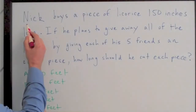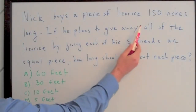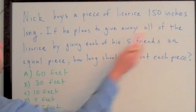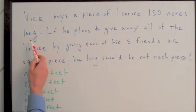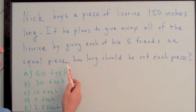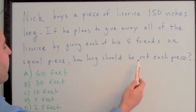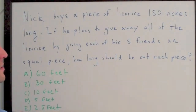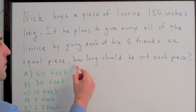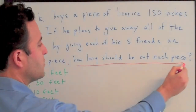Let's go to the board. Nick buys a piece of licorice 150 inches long. If he plans to give away all of the licorice by giving each of his five friends an equal piece, how long should he cut each piece?